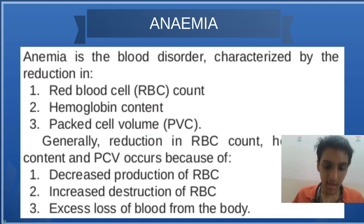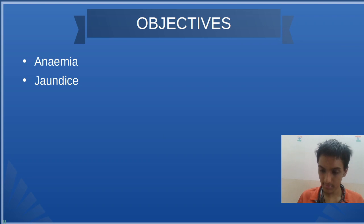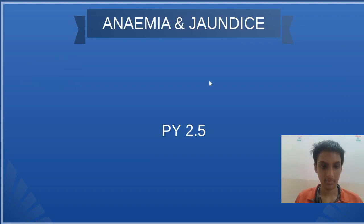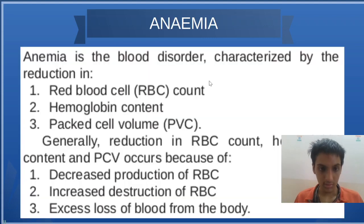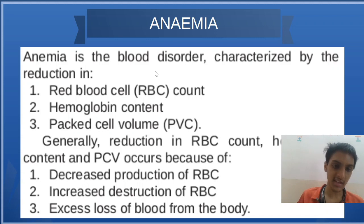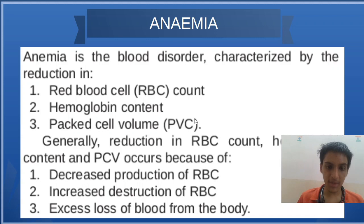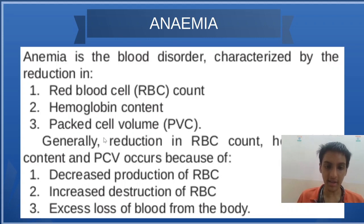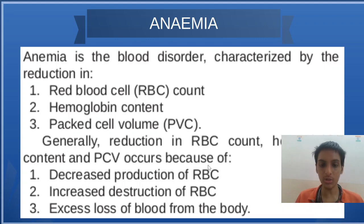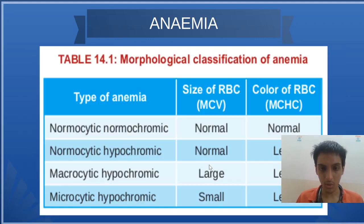Anemia is a blood disorder characterized by a reduction in RBC, hemoglobin, and PCV. This happens because there is either a breakdown of the RBC or an excess loss of blood.